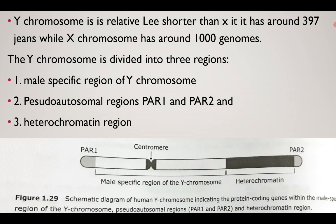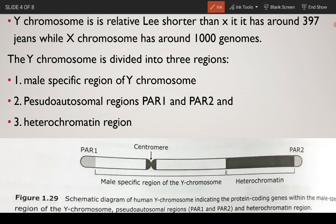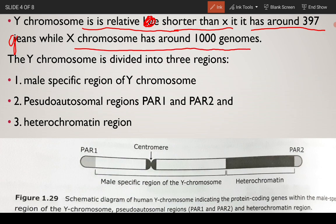The Y chromosome is relatively shorter than the X chromosome and has around 397 genes, while the X chromosome has around 1,000 genes. The Y chromosome is divided into three regions.